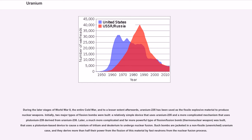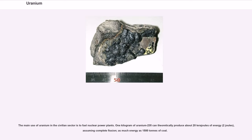During the later stages of World War II, the entire Cold War, and to a lesser extent afterwards, uranium-235 has been used as the fissile explosive material to produce nuclear weapons. Initially, two major types of fission bombs were built: a relatively simple device that uses uranium-235 and a more complicated mechanism that uses plutonium-239 derived from uranium-238. Later, a much more complicated and far more powerful type of fission-fusion bomb, thermonuclear weapon, was built that uses a plutonium-based device to cause a mixture of tritium and deuterium to undergo nuclear fusion. Such bombs are jacketed in a non-fissile, unenriched uranium case, and they derive more than half their power from the fission of this material by fast neutrons from the nuclear fusion process.